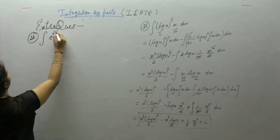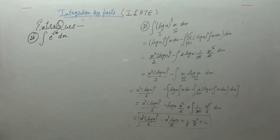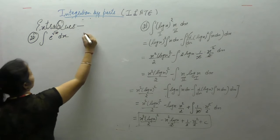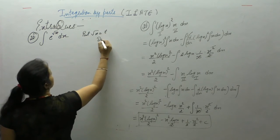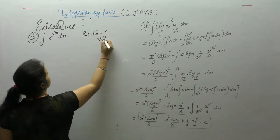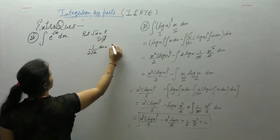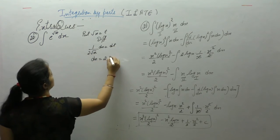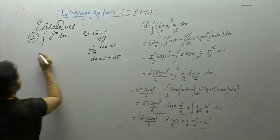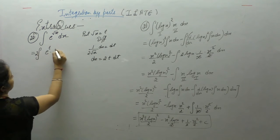Next is integral of e^(√x). Put √x = t. Derivative gives 1 by 2√x · dx = dt, so dx = 2t dt. The integral becomes e^t · 2t dt.